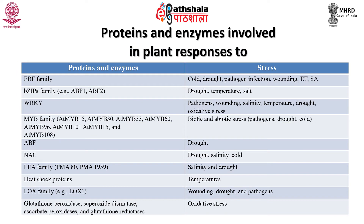Here is the list of different proteins and enzymes involved in plant response to different kinds of stressors. The proteins and enzymes include those of the ERF family, bZIP family, MYB family, NAC family, LEA family, heat shock proteins, LOX family, and some enzymes responsible for oxidative stress.